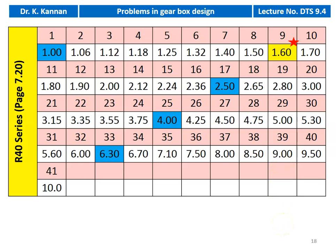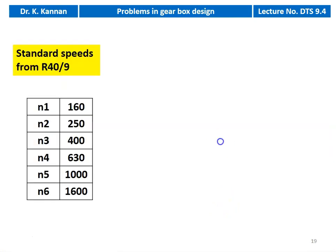Starting from 160 RPM with progression ratio 1.6 (R40/9 series), we count 9 values at each step: 160, 250, 400, 630, 1000, and 1600 RPM. These give the six different speeds: N1 = 160, N2 = 250, N3 = 400, N4 = 630, N5 = 1000, and N6 = 1600 RPM.